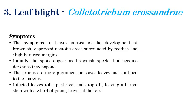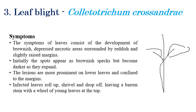The next disease is leaf blight, which is caused by Colletotrichum crossandrae. Initially, development of brown or red necrotic spots can be seen on the surface of the leaves.